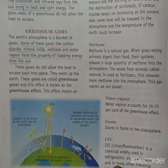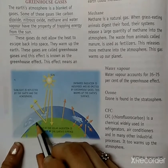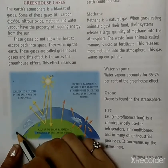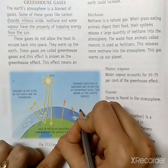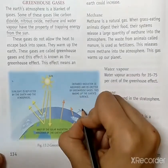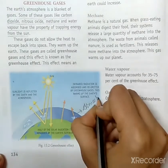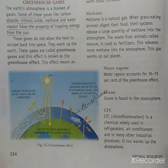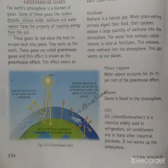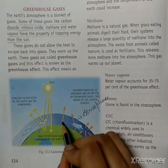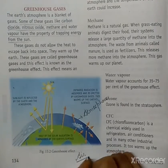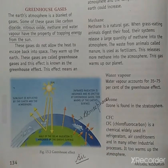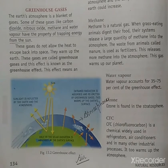The next topic is greenhouse gases. As you know, the earth's surface is covered by a thick blanket — that is called the atmosphere. The atmosphere is a thick blanket of air, and it is made up of five different layers that we have already read in the previous chapter. Air is a mixture of gases, and there are certain gases which are responsible for trapping heat.